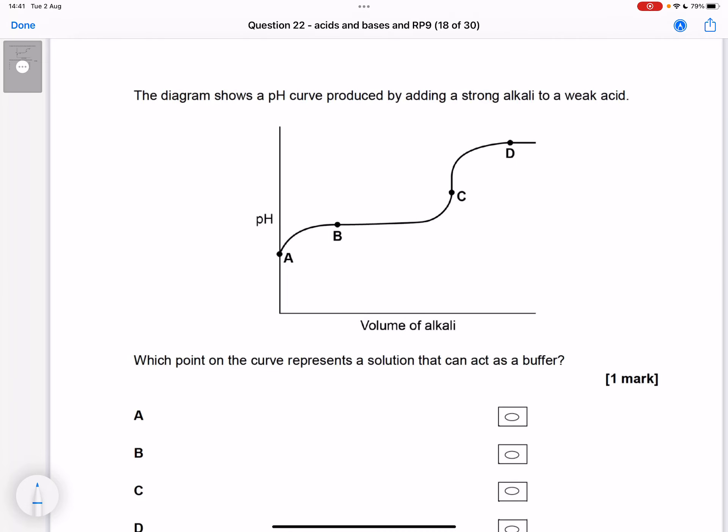We've got to remember that a buffer is a solution which resists changes in pH upon addition of small amounts of acid or alkali, which means that as we're changing the volume of alkali, what we need to see is that the pH isn't changing.